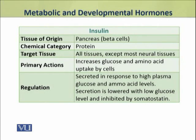First, insulin, which is produced by the beta cells of the pancreas. It is a protein hormone and it targets almost all tissues of the body except the neural tissues. Its primary action is to increase the uptake of glucose and amino acids by the cells. Its secretion is stimulated by high plasma glucose and amino acid levels.